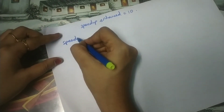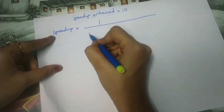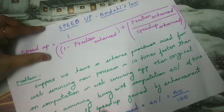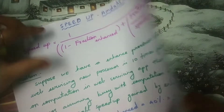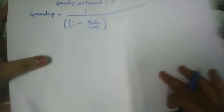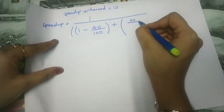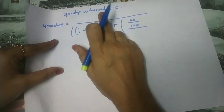Now using this formula we can calculate the speed-up. Speed-up equals 1 divided by (1 minus fraction enhanced). The value for fraction enhanced is 40 by 100, plus fraction enhanced (40 by 100) divided by speed-up enhanced, which is 10.